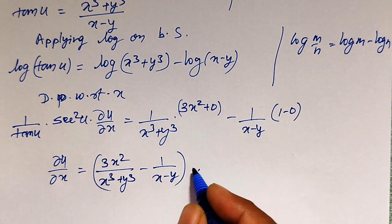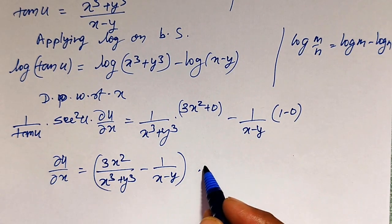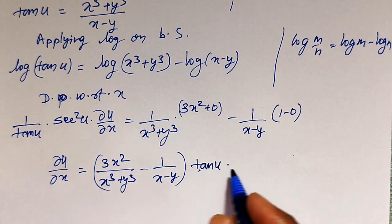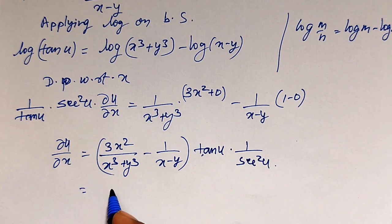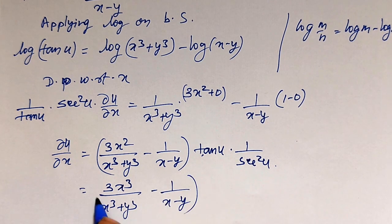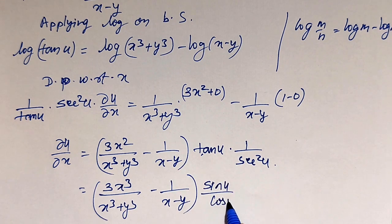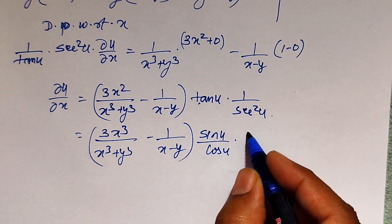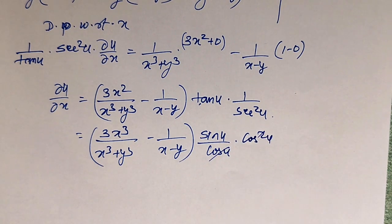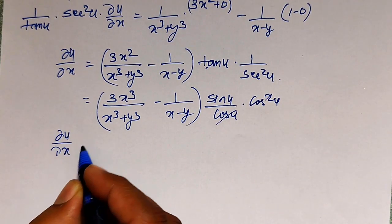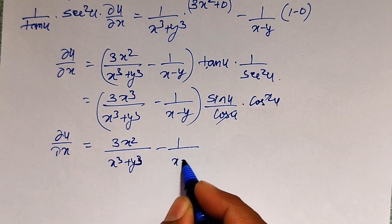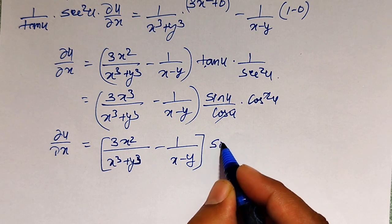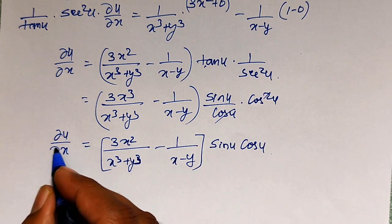Simplifying, the 1 over tan u multiplies to the other side as tan u over secant square u. Writing it out and simplifying, ∂u/∂x equals 3x square divided by x cube plus y cube minus 1 divided by x minus y, all multiplied by sin u into cos u. This is my ∂u/∂x.